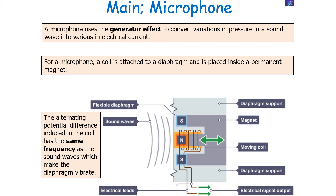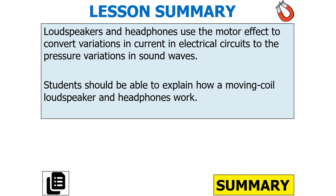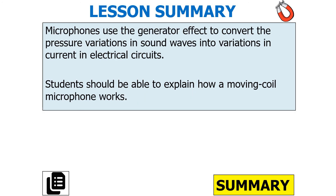Microphones and loudspeakers basically work in the opposite way. The microphone uses the generator effect whilst the loudspeaker uses the motor effect. The microphone converts sound waves into an alternating electrical current, whilst the loudspeaker converts an alternating electrical current into sound waves. Loudspeakers and headphones use the motor effect to convert variations in current to pressure variations in sound waves, whilst microphones use the generator effect to convert pressure variations in sound waves into variations in current in electrical circuits.